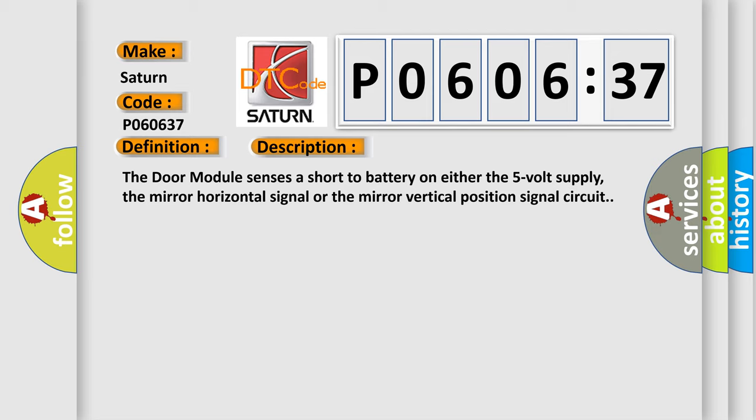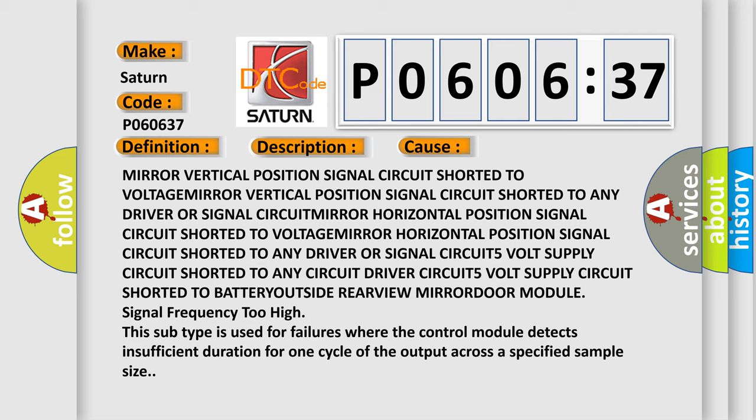This diagnostic error occurs most often in these cases: mirror vertical position signal circuit shorted to voltage, mirror vertical position signal circuit shorted to any driver or signal circuit, mirror horizontal position signal circuit shorted to voltage, mirror horizontal position signal circuit shorted to any driver or signal circuit, 5V supply circuit shorted to any circuit driver circuit, 5V supply circuit shorted to battery, outside rearview mirror door module signal frequency too high. This subtype is used for failures where the control module detects insufficient duration for one cycle of the output across a specified sample size.